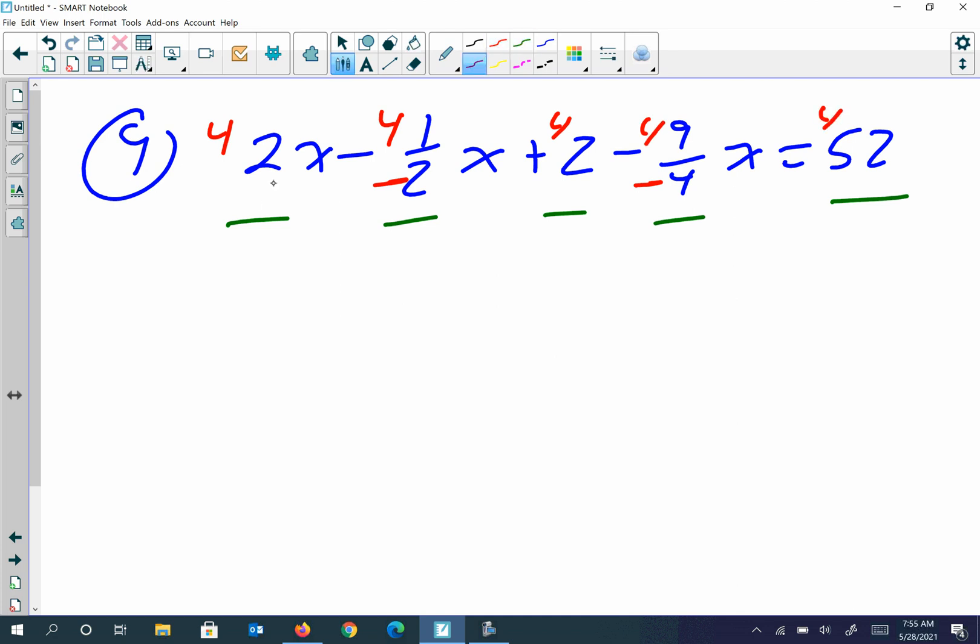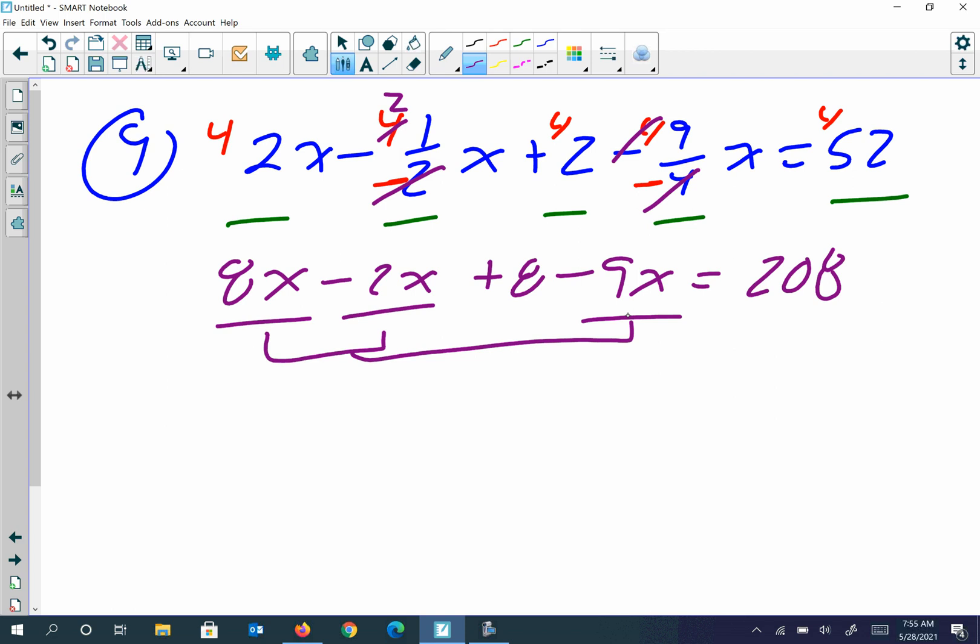And then go ahead and start reducing. This is no reducing on the first one - that's 8x. This one reduces to 2, so negative 2 times 1 is negative 2x plus 8. That cancels completely, so I get minus 9x is equal to 208. I do have some like terms over here, so combine those: I get 6x. Combine those: I get negative 3x plus 8 equals 208.